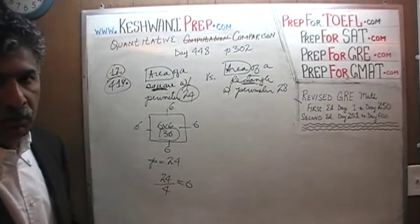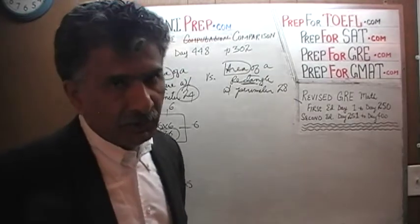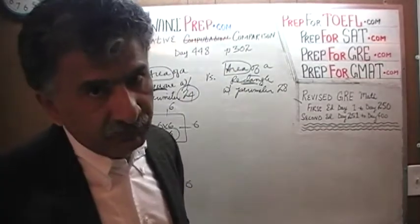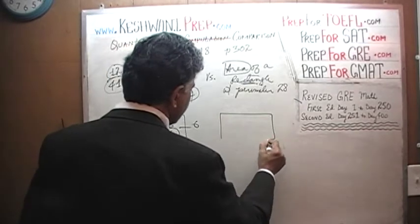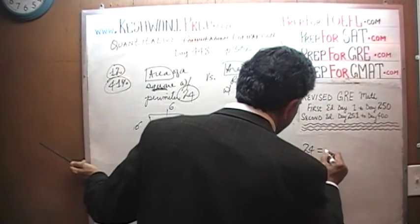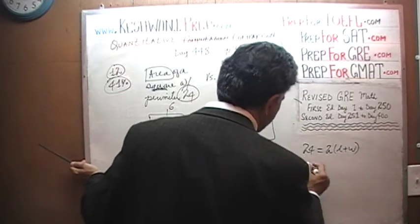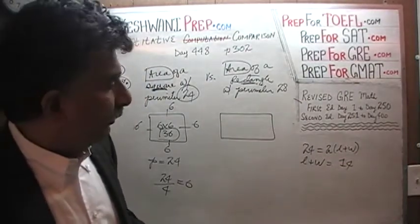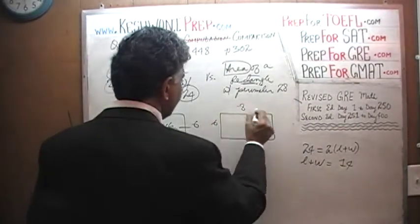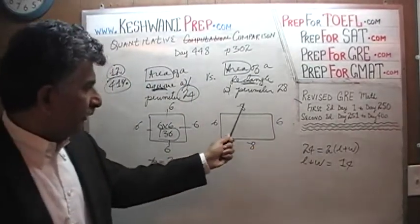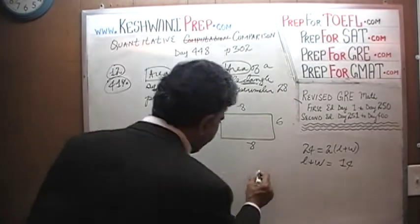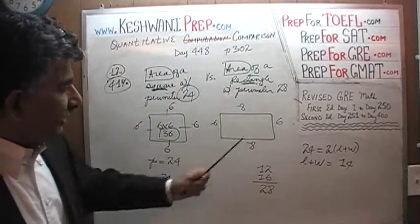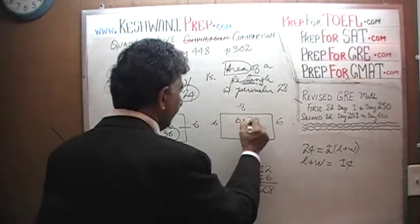It is the rectangle that we have to be a little bit more concerned about, because there might not be just one rectangle with a perimeter of 28. Just make up a rectangle with a perimeter of 28: 2 times (length plus width) equals 28, which means length plus width has to be 14. How about 6 and 8? 6 plus 8 is 14. 6 plus 6 is 12, and 8 plus 8 is 16 — 12 plus 16 is 28. The perimeter is 28.